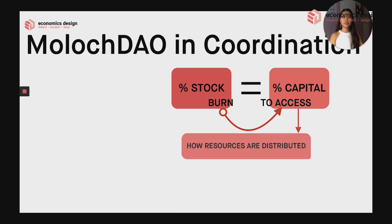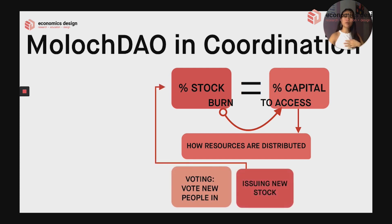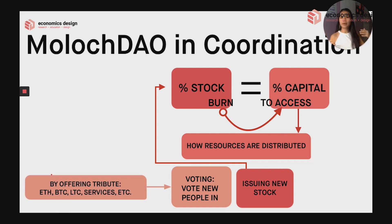One stock is one vote, and members also get to vote on which projects to invest in. This mechanism makes it easier for people to vote to leave or defect — if you truly do not want to be part of the DAO system anymore, you can destroy your stocks, take the capital, and leave. This is good in terms of coordination because those who do not wish to coordinate will exit, and now we have a group of participants who are willing to coordinate.